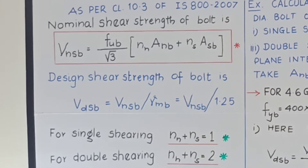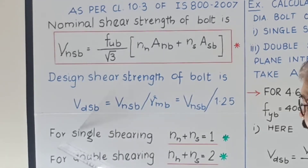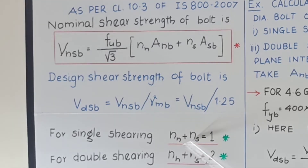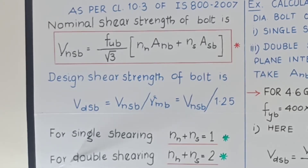If plates are connected by a lap joint, the bolts will be subjected to single shear. If bolts are used for a single cover butt joint, the bolt is also in single shear — in that case total number of shear planes (n_n + n_s) = 1. In case of a double cover butt joint, where there is a cover plate below and above the plates, the bolts are subjected to double shear, so n_n + n_s = 2.